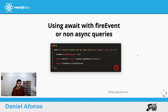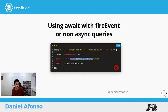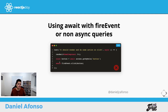Third mistake: using await with fireEvent or non-asynchronous queries. There is only one asynchronous query in the React Testing Library: FindBy. You shouldn't await a GetBy query or a fireEvent call, because both are synchronous. Someone once said they'd seen someone await fireEvent online — they were probably looking at the Vue Testing Library docs, where fireEvent is asynchronous.